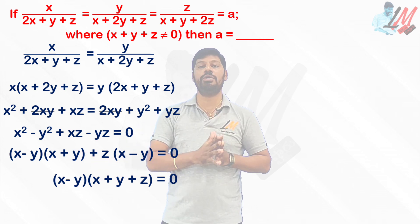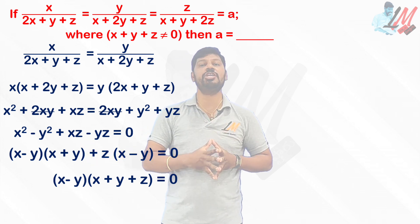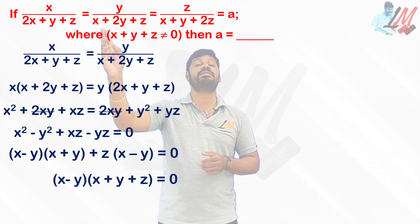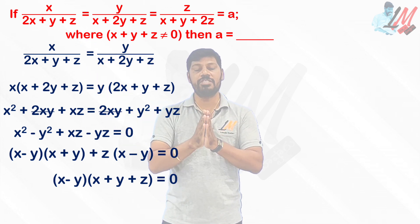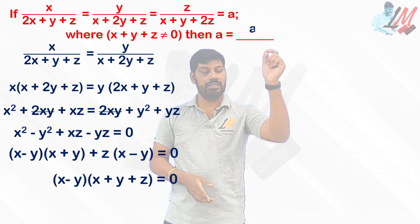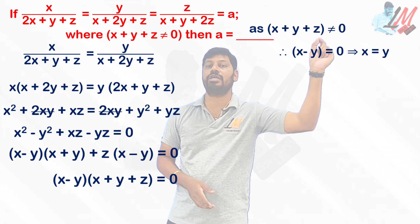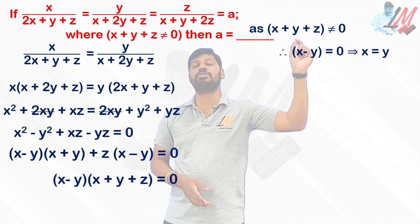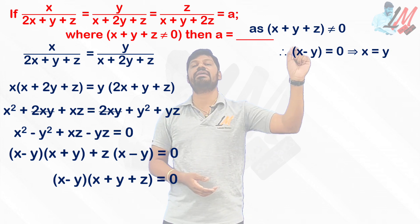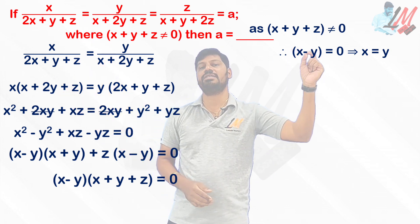When the product of two quantities equals zero, any one of those two quantities must be zero. But the question states x + y + z ≠ 0, which means x − y must equal zero. Therefore x − y = 0, which gives us x = y. So by comparing the first two expressions, we conclude x = y.